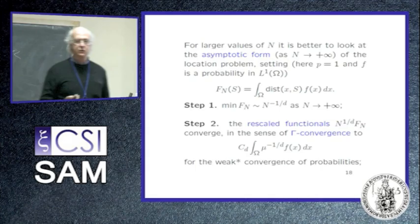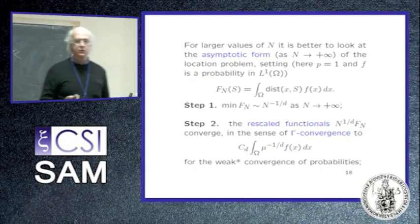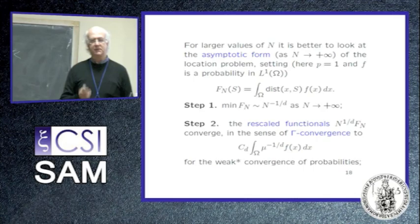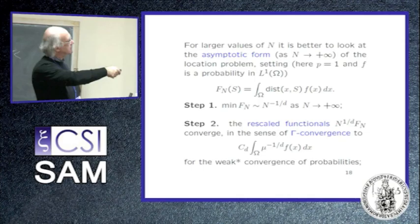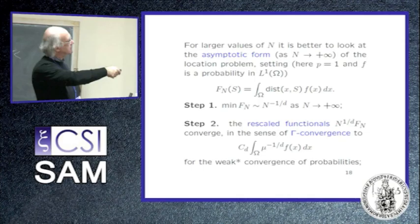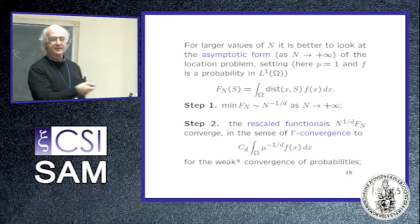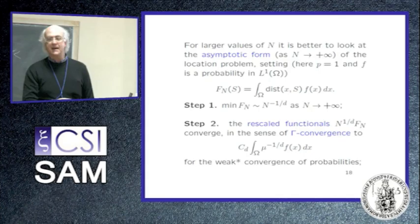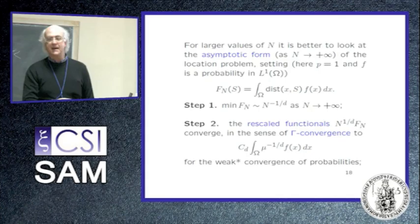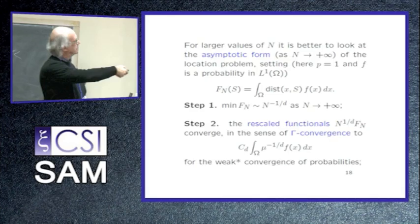Now you can compute the gamma limit. Why the gamma limit? Because you are interested in the behavior of minimizers — gamma convergence is the right convergence which allows you to pass to the limit in minimizers. So the goal is to compute the gamma limit of the rescaled function. This is possible, and you end up with a constant depending only on the dimension times an integral, where f of x appears linearly because it was linear in the approximating problem.